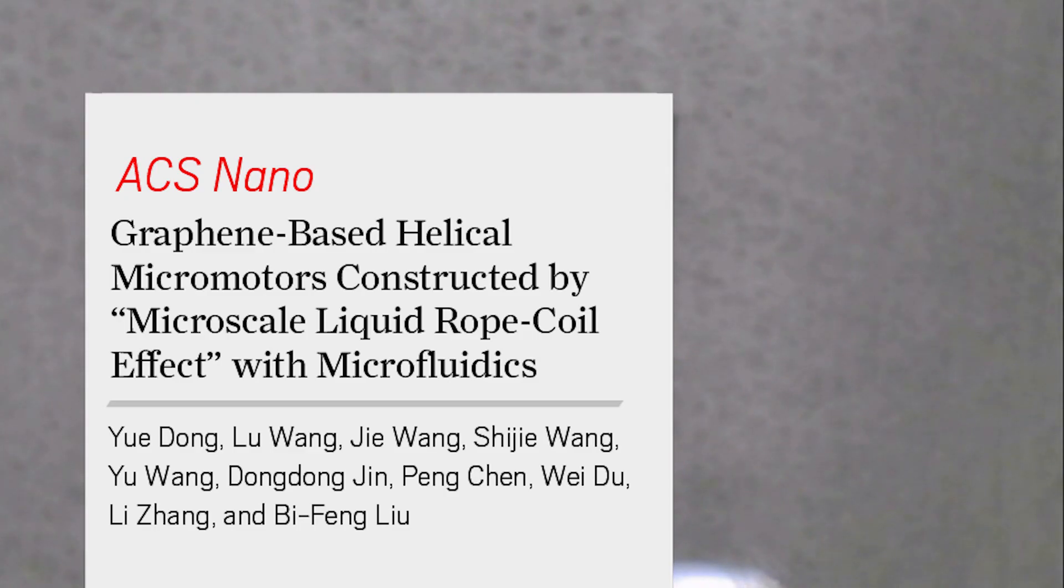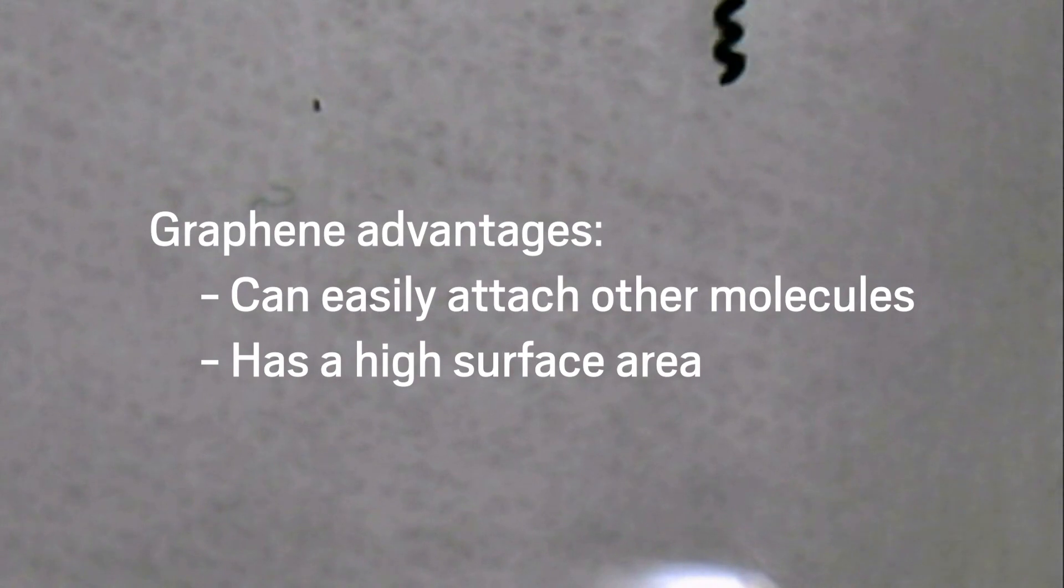Now, a team of researchers at the Chinese University of Hong Kong and Huacheng University of Science and Technology have developed novel magnetic responsive micromotors made of graphene. Researchers can easily attach other molecules to graphene, and the material has a high surface area which makes it attractive for picking up pollutants.